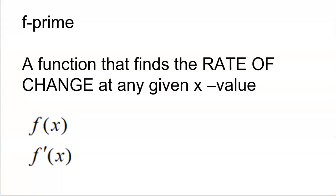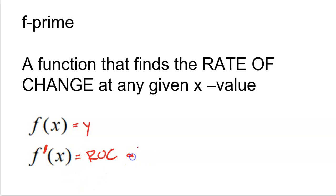So first off, what is f prime? f prime is a special function that finds the rate of change at any given x value. We already know f of x — our standard function where x goes in and y comes out. However, f prime of x, signified with this little accent mark, is a special function where x goes in and out comes the rate of change at that x value. We don't get a y value — f prime produces the rate of change at any given x value.